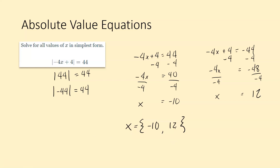You can also check this by plugging these back into your original equation. If I plug in negative 10, you have negative 4 times negative 10, which is 40, plus 4 is 44. So the absolute value of 44 is 44. And if you plug in 12, you get 12 times negative 4, which is negative 48, plus 4 is negative 44. The absolute value of negative 44 is 44. If it helps to do that mentally or write out all the steps to make sure you have the right answer, please do — just don't forget the absolute value step.